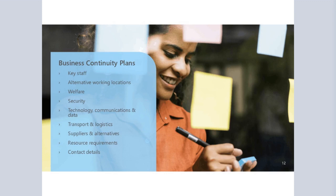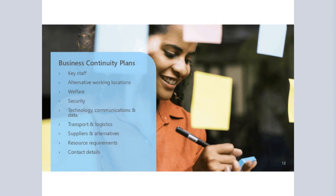Depending on whether you want your plans to be tactical or operational, you'd expect to see things like: who are your key staff and team; where will you work if going to an alternative location; welfare services such as counselling; security; technology, communications and data considerations; transport and logistics — for example, do you have a local taxi firm on retainer to help move people in an emergency; who are your key suppliers and do you have alternatives; and resource requirements and contact details.